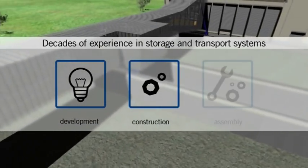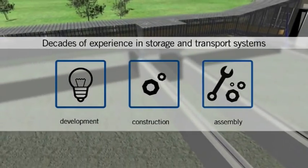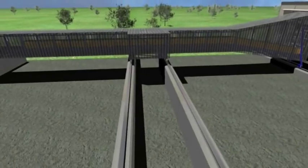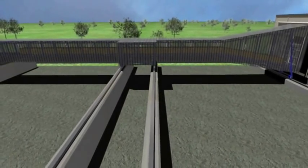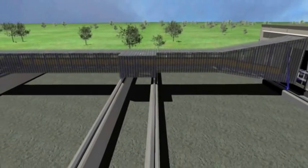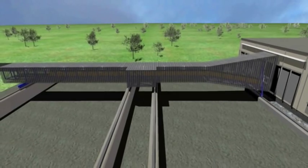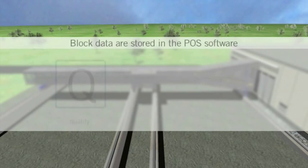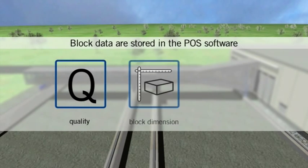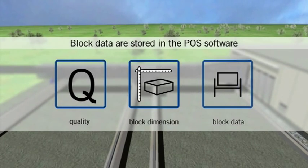It is during this sensitive stage of foam production that Boehmer's decades of experience in the development, engineering, manufacturing, and installation of storage systems prove decisive. Boehmer has continually developed its know-how further in order to handle all types of foam, from standard foam qualities to specialties such as viscoelastic or HR foam. Whilst the long block is being placed on the block rack, all the block's data — for example quality, color, block dimensions, and storage location — is stored with an ID in the POS software.